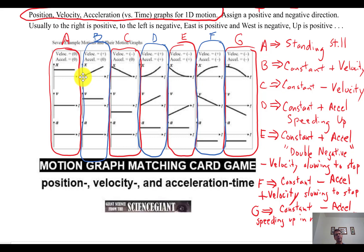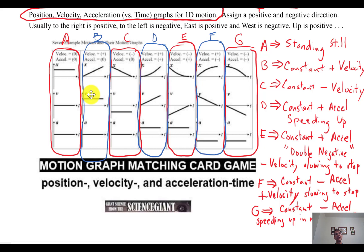The velocity graph for example B is a horizontal line, because the velocity is steady at 6 m/s. The slope of that velocity line is zero, so acceleration is zero. Example C shows an object already moving at time zero with a constant negative velocity — like a car rolling and not accelerating. The position graph has a constant negative slope, the velocity is constant negative, and the acceleration graph is zero.